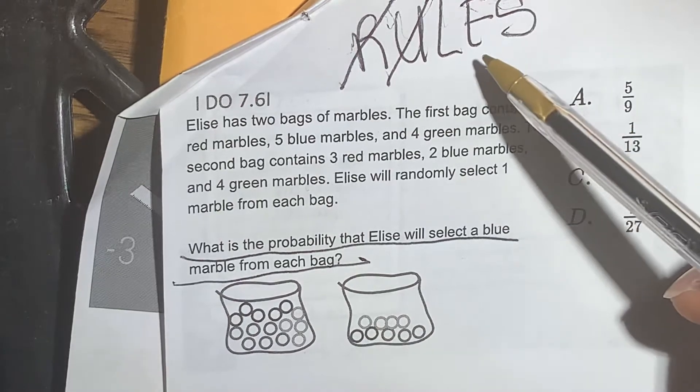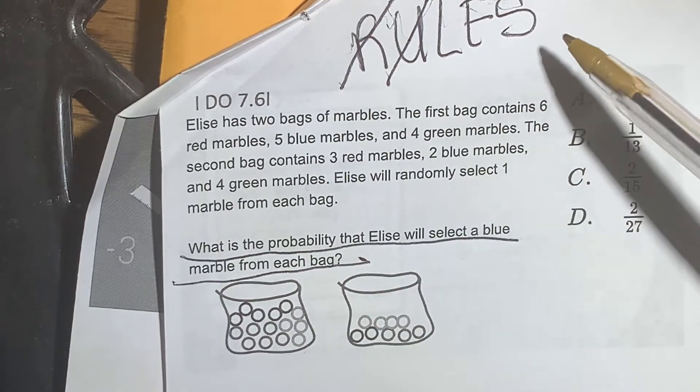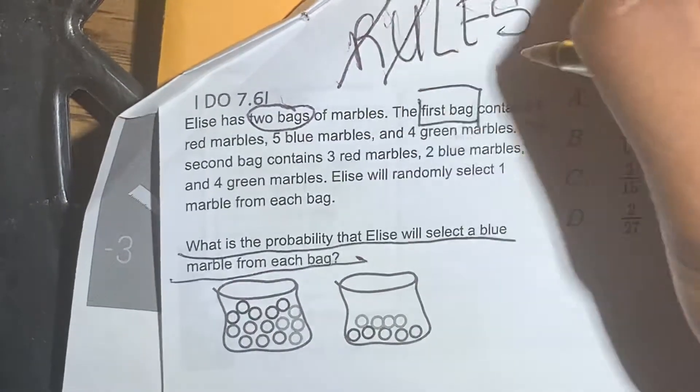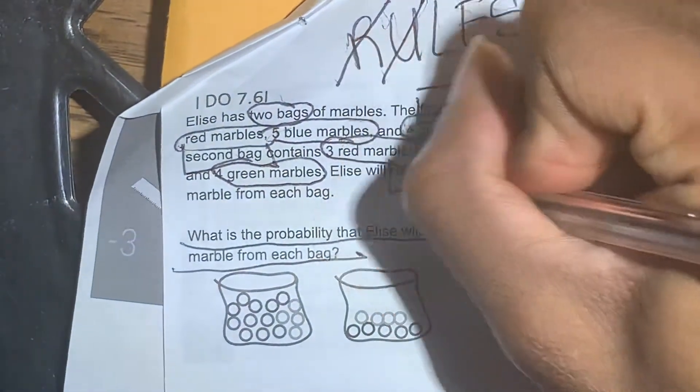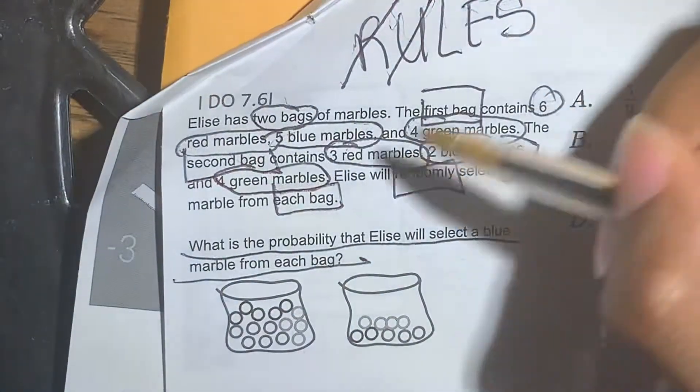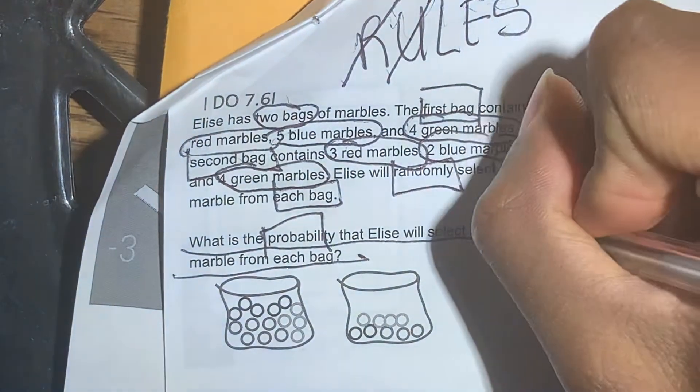Now, for labeling and annotating the L, we're going to circle all numbers and box all keywords and key terms. She has two bags of marbles. The first bag — bag one — contains six red, five blue, and four green. The second bag contains three red, two blue, and four green. Elise will randomly select one marble from each bag. What is the probability that Elise will select a blue marble from each bag?